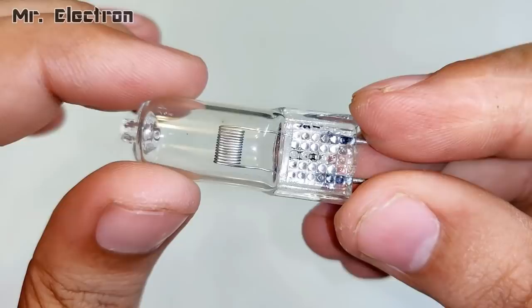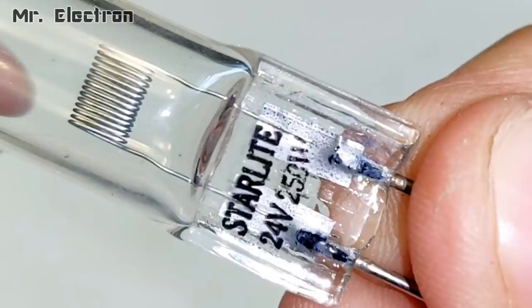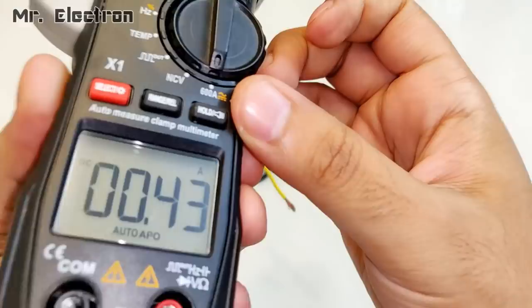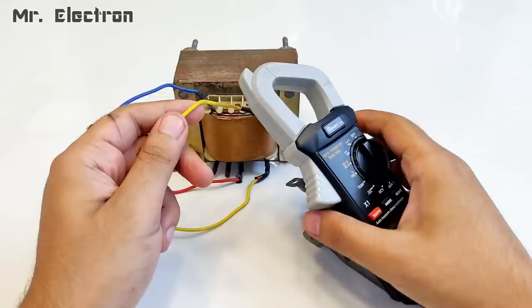This is a 24 volts 250 watts bulb which I'm going to test with this transformer, and I'm also going to measure the output current with the help of this clamp meter. You can see it can measure up to 600 amps AC or DC.